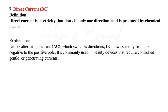Number seven, direct current. Direct current is electricity that flows in only one direction and is produced by chemical means. Unlike alternating current, which switches direction, direct current flows steadily from the negative to the positive pole. It's commonly used in beauty devices that require controlled, gentle, and penetrating currents.